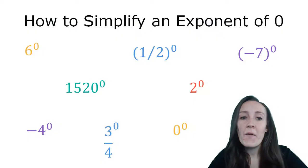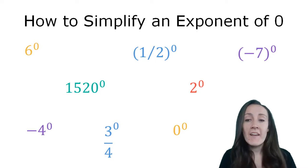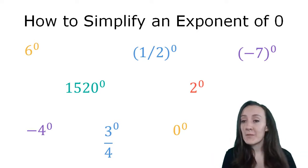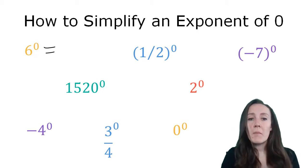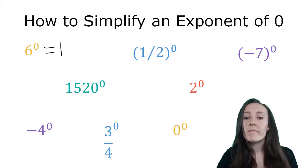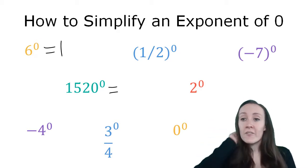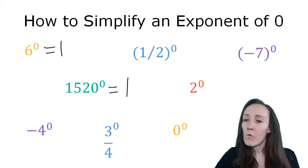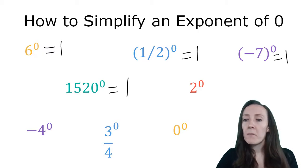An exponent of zero is actually one of the easiest exponents to simplify, because any number raised to a zero exponent just equals one. So if you have six to the zero power, that's going to equal one. If you have a ginormous number like 1520, that's just going to equal one. If you have a fraction raised to zero power, it equals one. If you have a negative number raised to a zero power, it equals one.